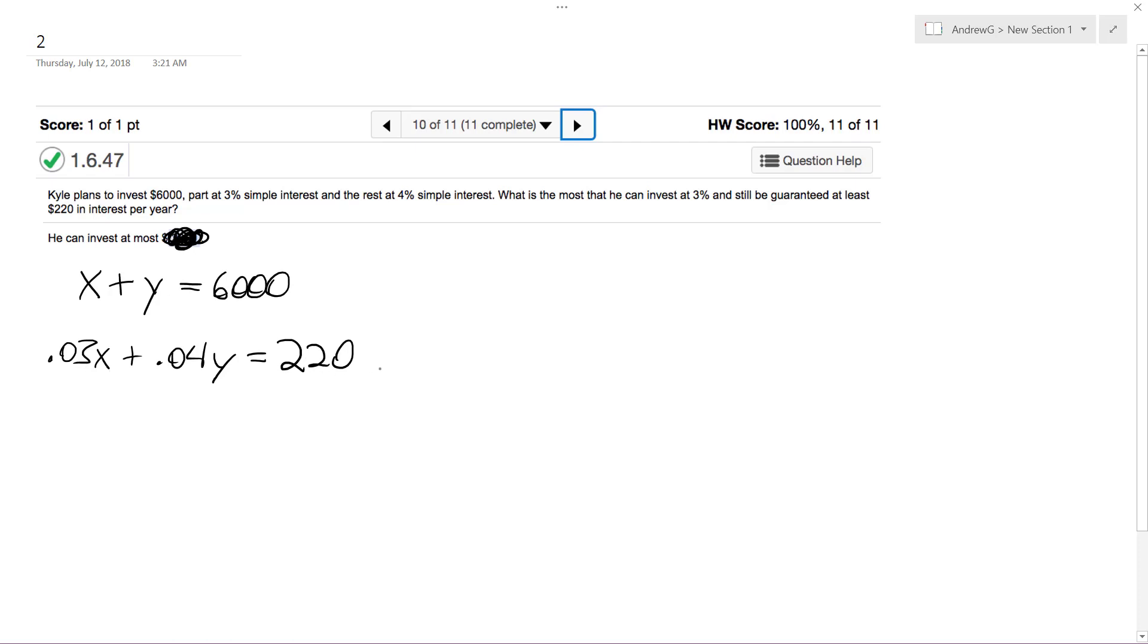So what I'm gonna do is substitute for Y. So over here Y equals 6,000 minus X. So we get 0.03X and then plus 0.04 times 6,000 minus 0.04X. Oh oops, I didn't solve it yet.